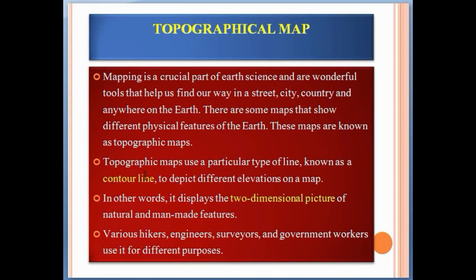Topographic maps use a particular type of line known as contour lines to depict different elevations on a map. In other words, it displays a two-dimensional picture of natural and man-made features. Various hikers, engineers, surveyors and government workers use it for different purposes.